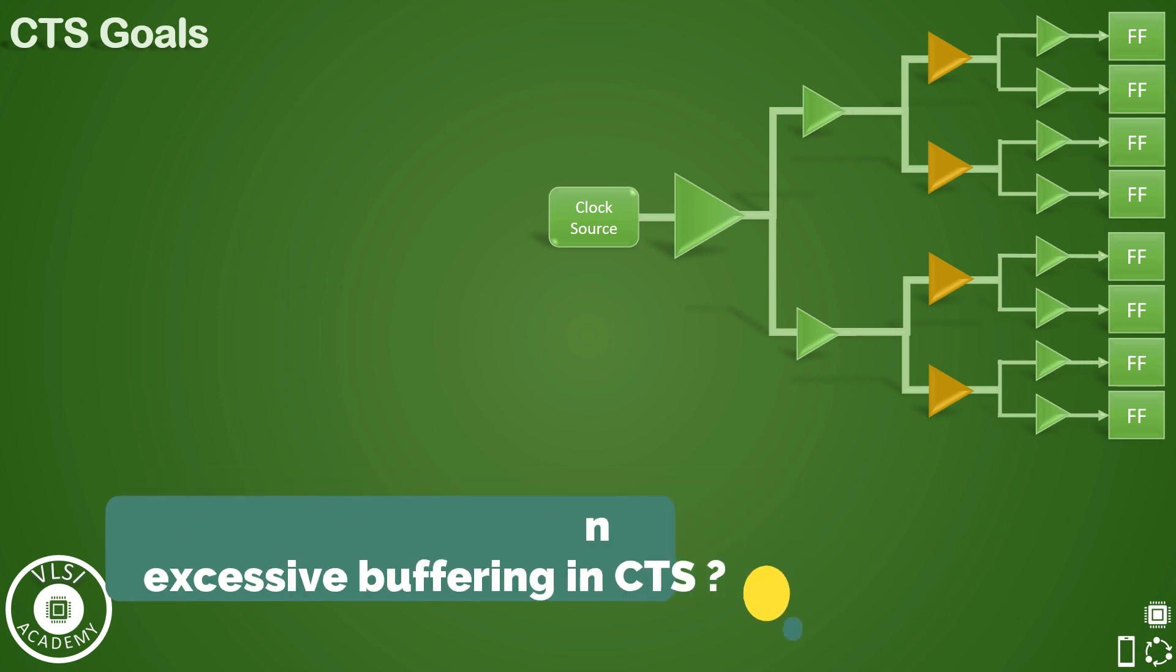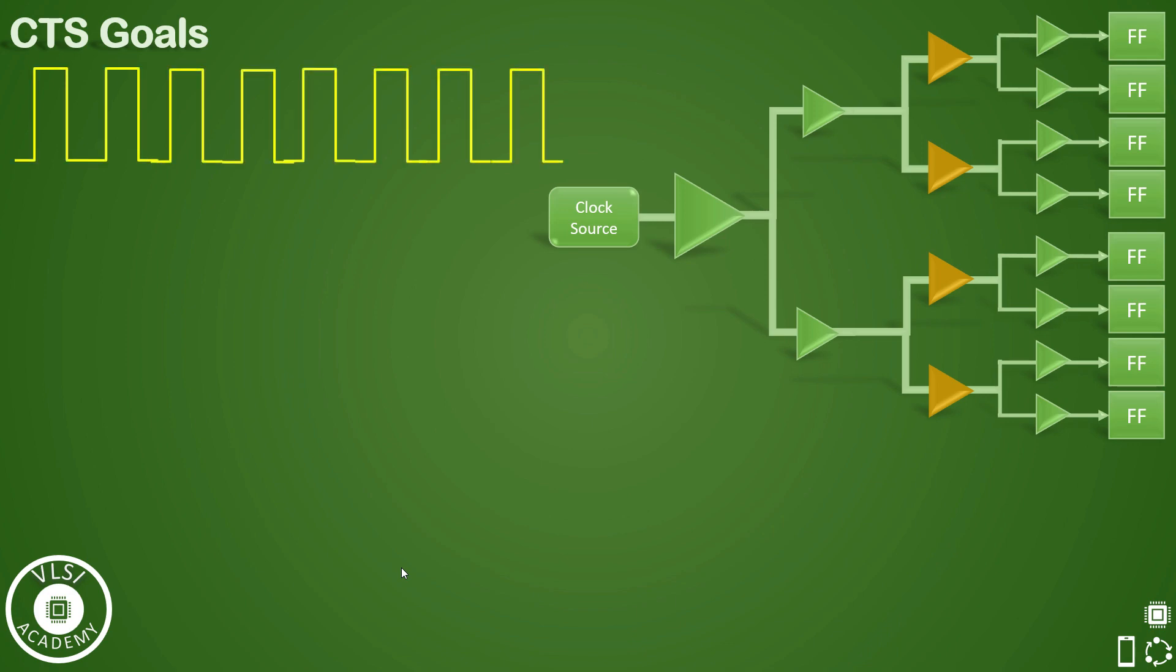As we mentioned earlier, clock is a constantly switching waveform. The clock buffers and inverters used during CTS are implemented with a CMOS architecture. Hence, when a CMOS switches, we have learned earlier that PMOS and NMOS both will be turning on and that leads to the power dissipation.